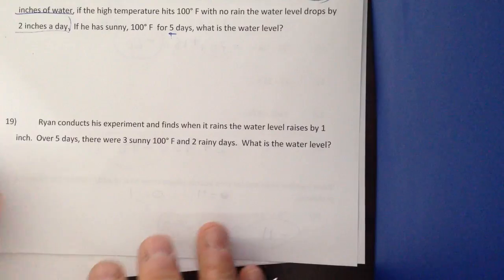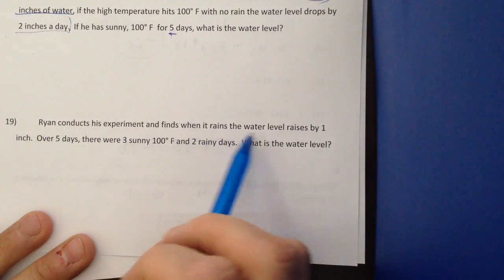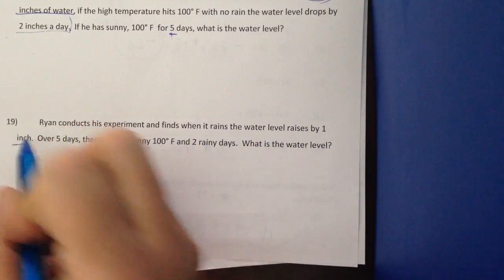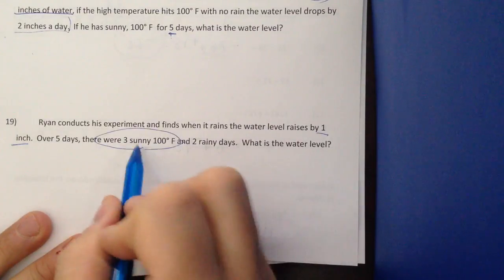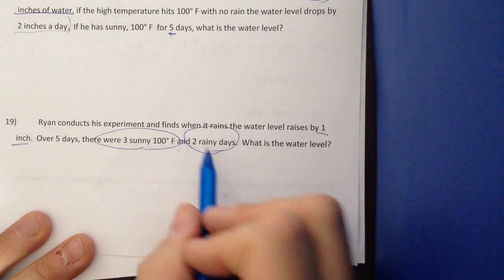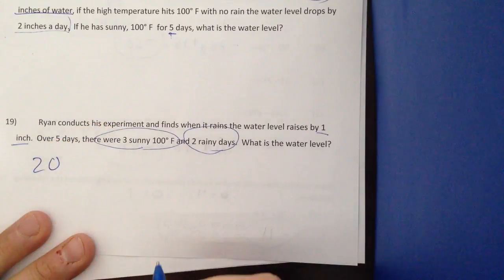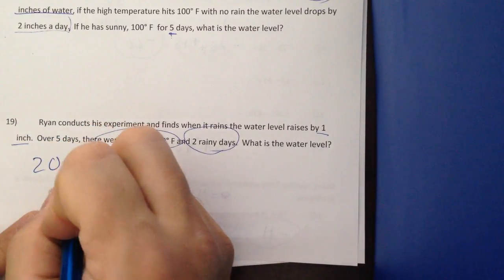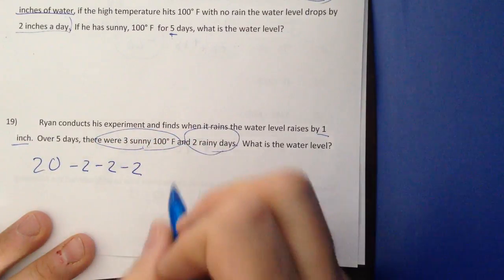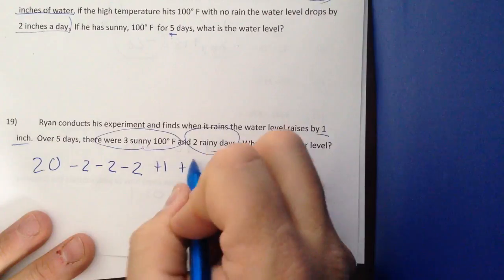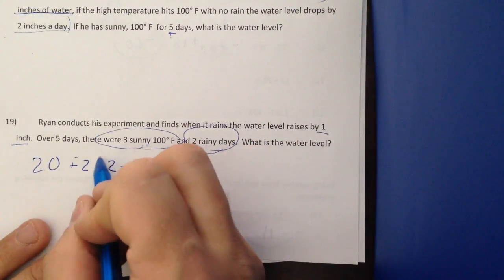The reason I read through that problem is because I really wanted to concentrate on the next one. 19 is a little bit more difficult. Ryan conducts his experiment and finds when it rains, the water goes up by 1 inch. So over 5 days, there's 3 sunny days, 100 degrees Fahrenheit, 2 rainy days. What's the water level? Well, I know I started with 20, right? And my 3 sunny days, each day I'm going to take away 2. And my 2 rainy days, I'm going to add 1.